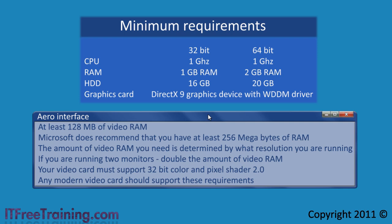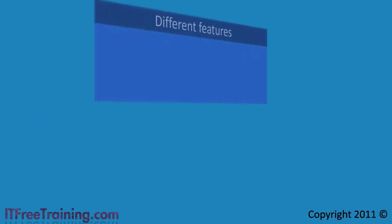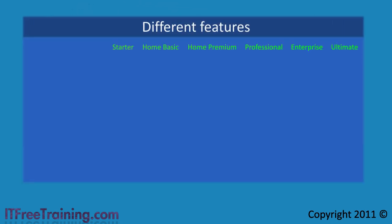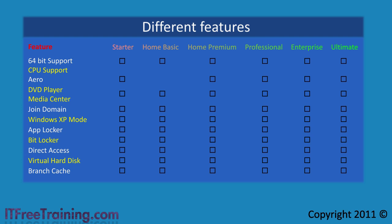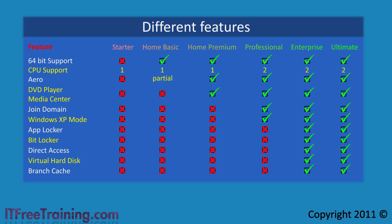Once you have determined if your computer meets the requirements to run Windows 7, you need to determine which edition of Windows you are going to install. There are 6 different editions of Windows 7. As you go from left to right, more features become available. Unlike Windows Vista, where certain features were available in Home Premium but not in Business or Enterprise, every feature from the previous edition is available in the next edition of Windows 7.